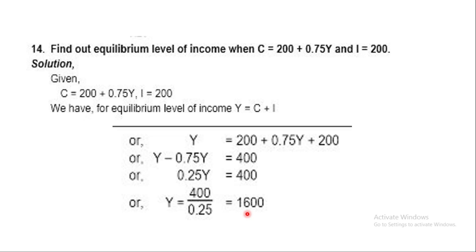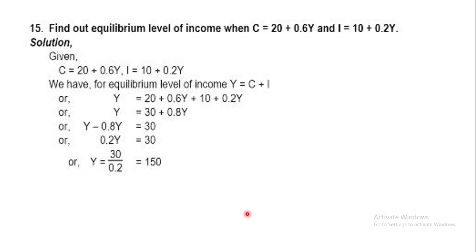Question 15 (last question): Find the equilibrium level of income when C = 20 + 0.6Y and I = 10 + 0.2Y. Y = C + I = 20 + 0.6Y + 10 + 0.2Y. So Y minus 0.8Y = 30, meaning 0.2Y = 30, giving Y = 30 divided by 0.2 = 150. That is our required answer.